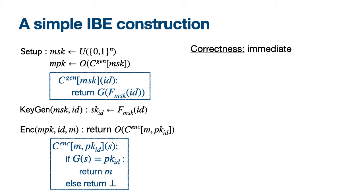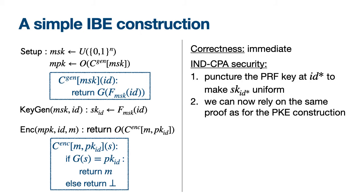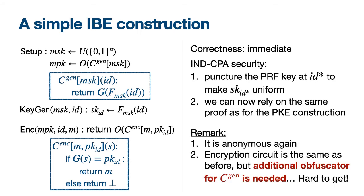Correctness of the IBE is immediate. For IND-CPA security, the proof follows the same structure as for PKE, except we must ensure the secret key of the target identity is random. Since it is a PRF evaluation, we first puncture the PRF at the target identity to make sk_{id*} uniform, then apply the same proof as before. The scheme is still anonymous for the same reason. However, the master public key circuit now performs both a PRG and PRF evaluation, which we don't know how to instantiate without general obfuscation.